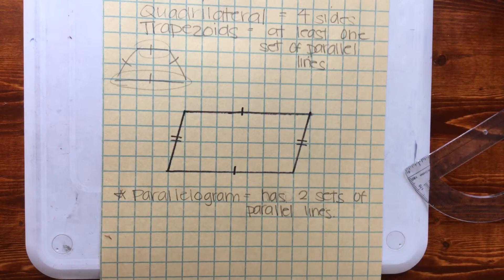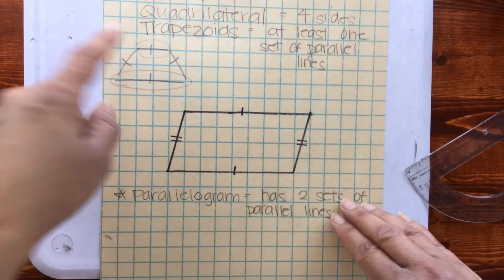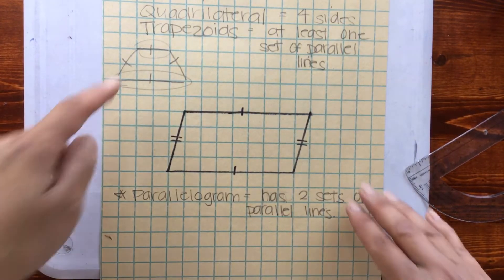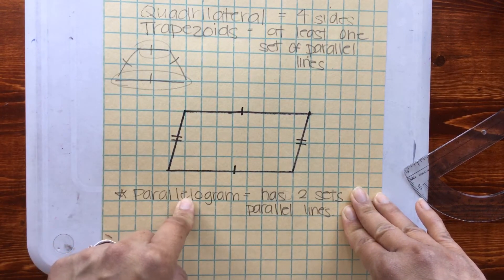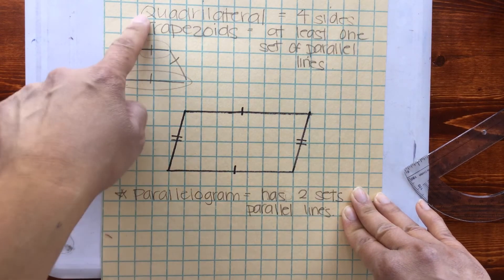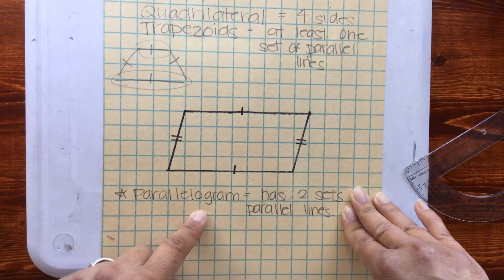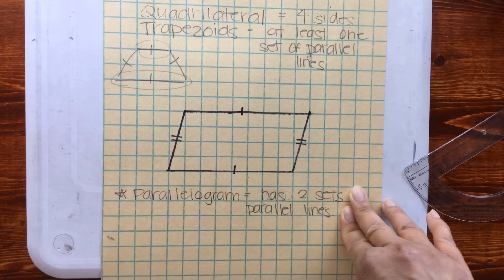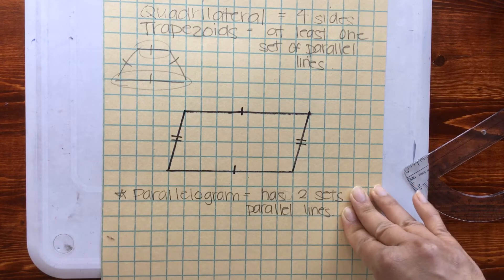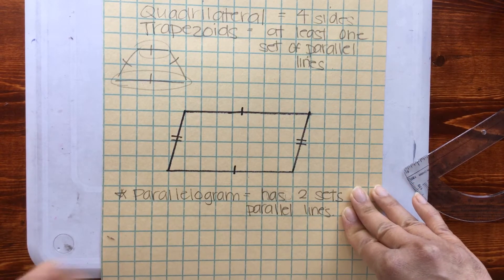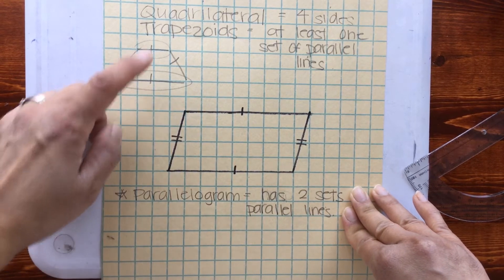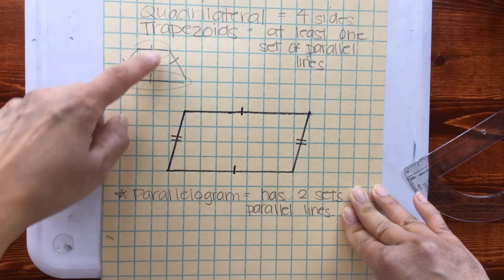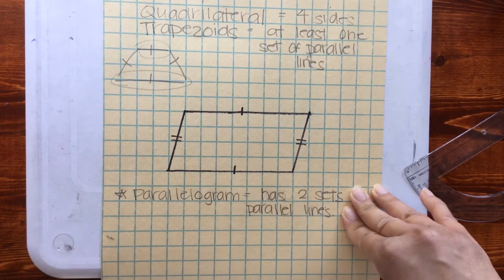What we need to understand is: is a trapezoid a parallelogram? A trapezoid will be a parallelogram if it's drawn with two sets of parallel lines — it's considered both. But this example of a trapezoid is not a parallelogram because it only has one set, and we know that a parallelogram has to have two sets.